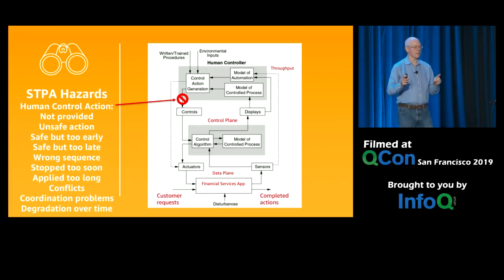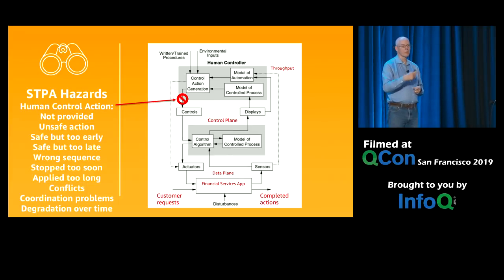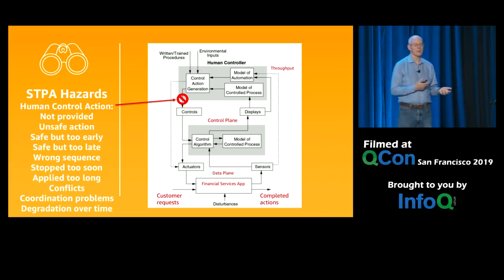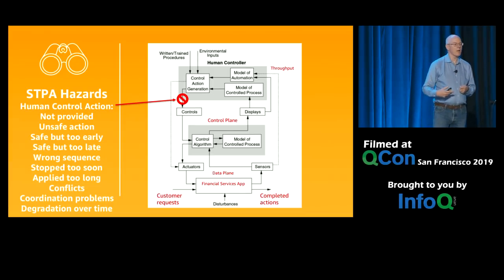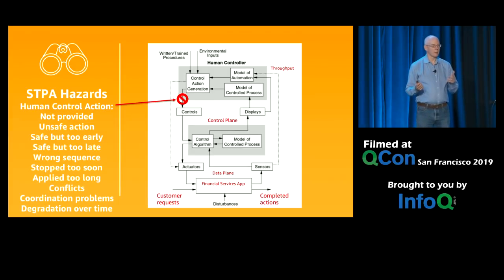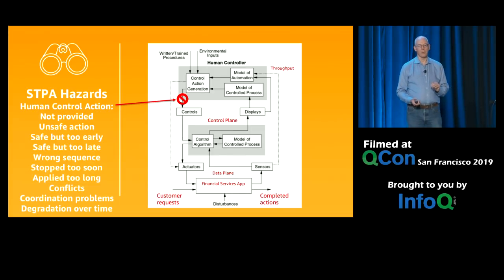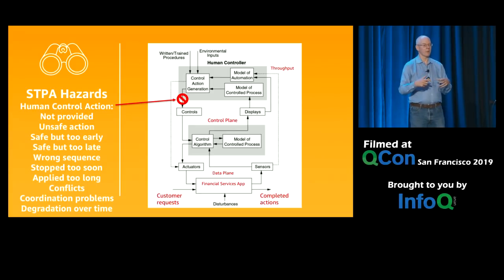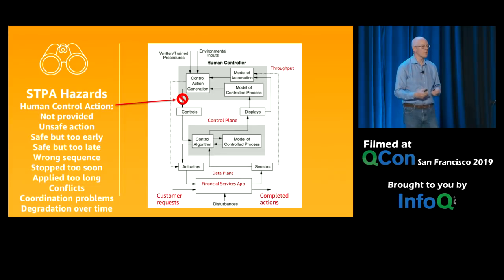Or it degrades over time — maybe the written procedure about how to fix this particular problem was written years ago and the system has changed enough that it no longer reflects reality. So this is a good checklist for hazards. If you're looking at how to control your environment and looking at the human interface, these are the standard list of hazards. You go through them one by one, think about how each applies to your system. How are we going to make sure only one person at a time is making a change? Get everybody on a conference call — you can't make a change unless you're dialed into the call. Those kinds of rules provide that coordination.